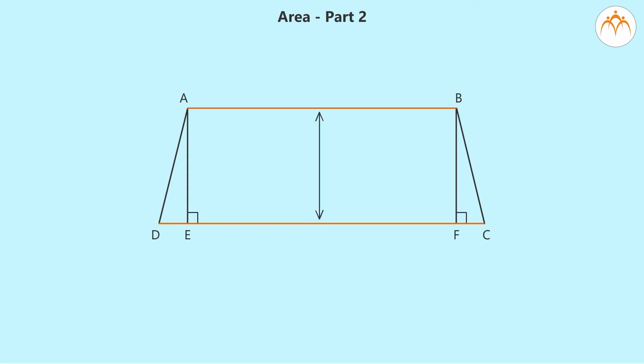The distance between them is the same. AEFB is a rectangle. To calculate the area of trapezium ABCD with AB equal to 4 centimeters, CD equal to 6 centimeters, and distance between AB and CD is 2 centimeters.